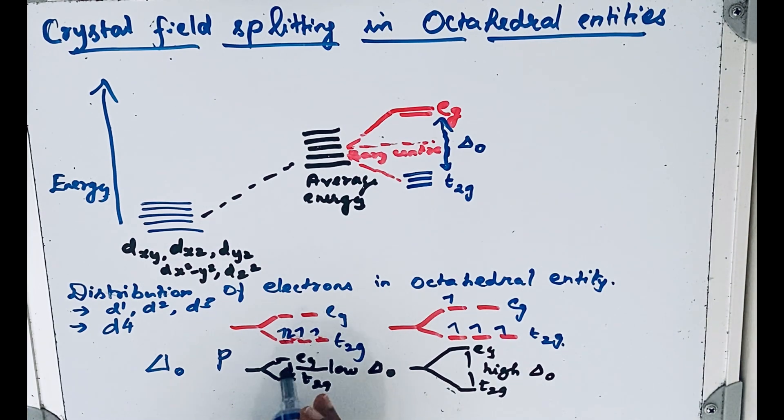That means pairing will not take place. This is possible because of weak field ligands. It is also called high-spin complexes. But if delta-o is greater than pairing energy, that means larger delta-o, so lesser energy is needed for pairing.